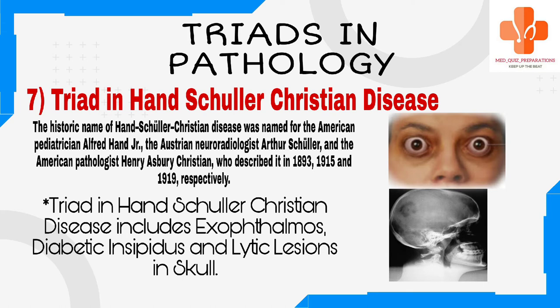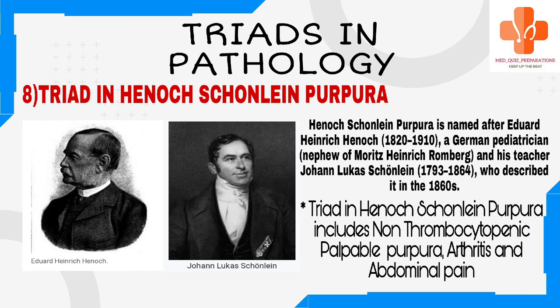Henoch-Schönlein purpura is named after Edward Heinrich Henoch, 1820–1910, a German pediatrician, nephew of Moritz Heinrich Romberg, and his teacher Johann Lucas Schönlein, 1793–1864, who described it in the 1860s. Triad in Henoch-Schönlein purpura includes non-thrombocytopenic palpable purpura, arthritis, and abdominal pain.